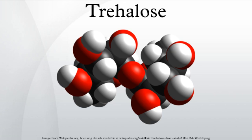Trehalose is also present in the nutrition exchange liquid of hornets and their larvae. It is the major carbohydrate energy storage molecule used by insects for flight. The glycosidic linkage of trehalose, when acted upon by an insect trehalase, releases two molecules of glucose, which is required for the rapid energy requirements of flight — double the efficiency of glucose release from starch, for which cleavage of one glycosidic linkage releases only one glucose molecule.